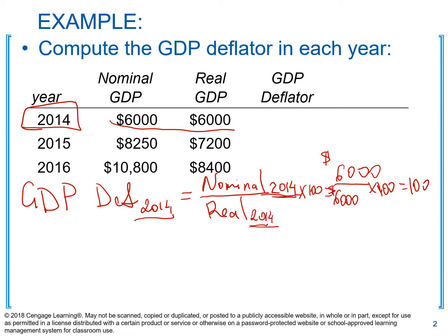Since 2014 was our base year, we learn that in the base year GDP deflator is always going to be 100, because real and nominal GDP were the same. So in the base year, GDP deflator equals 100 — it's an index that serves as our benchmark. It tells us that in this year the level of prices was at this level, and this is our reference point.